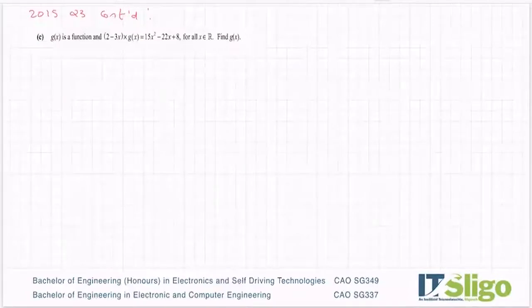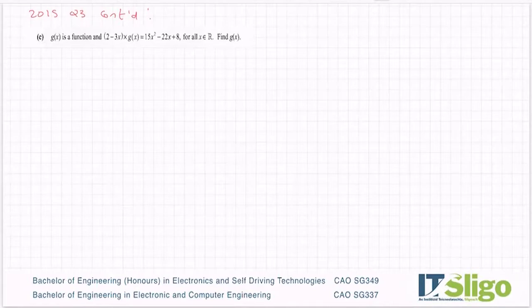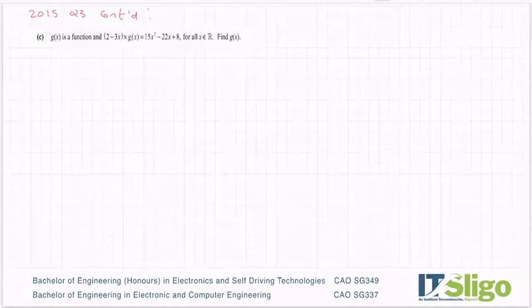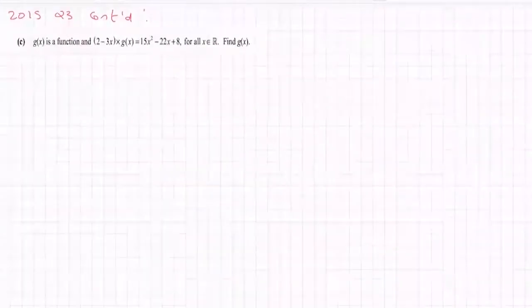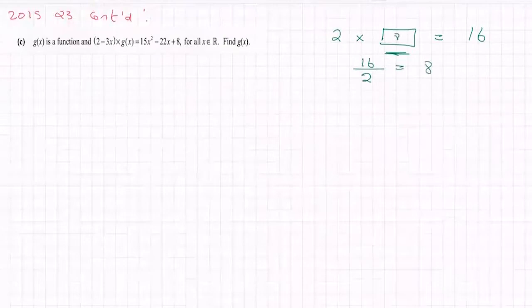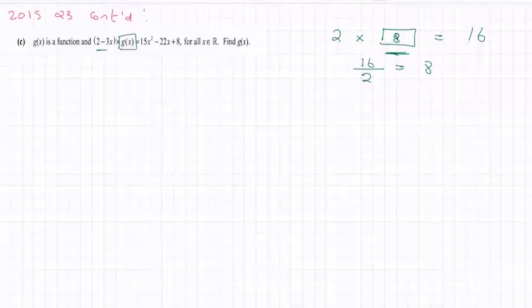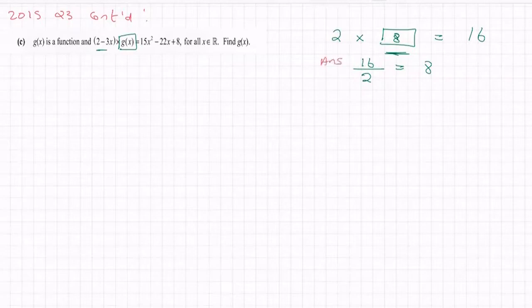Part C then said g of x is a function, and (2 minus 3x) multiplied by g(x) gives me 15x squared minus 22x plus 8 for all x is an element of R, and R is our real numbers. Find g(x). So not the easiest question to get your head around what they're asking. But if I said something to you like 2 multiply by box equals 16, you probably can work it out in your head what goes in the box. But the mathematical way of doing it is to take 16, which is our answer, divided by 2, and we get what goes in there. And we can do that because multiplication and division are the opposite of each other.